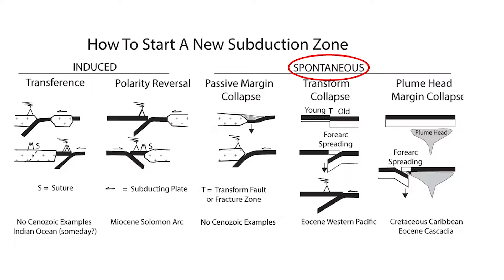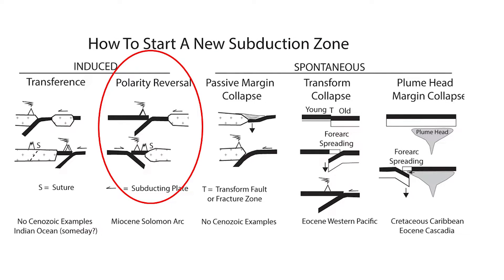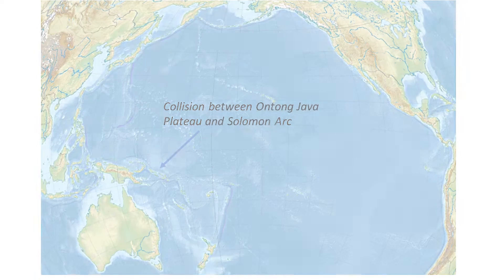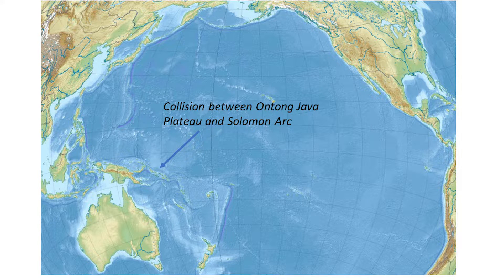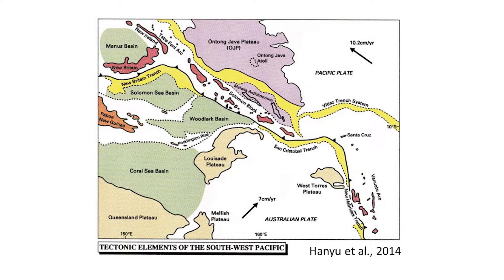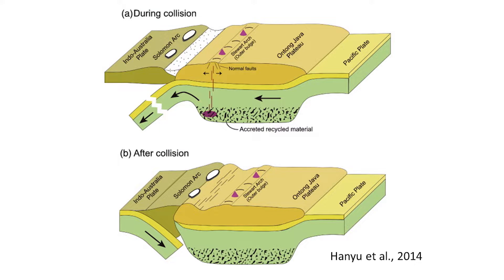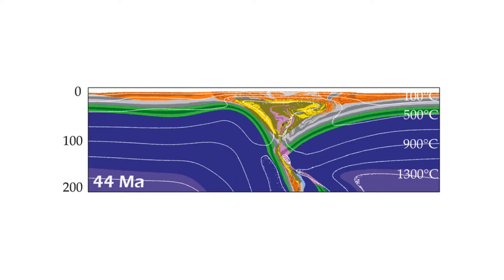The most important way that a new subduction zone can be induced to form is by polarity reversal, which sometimes happens when buoyant lithosphere is subducted beneath an oceanic arc. When this happens, the original subduction zone can fail and motion between the two plates may be accommodated by formation of a new subduction zone dipping the opposite way in the rear arc region. A good example is seen in the southwest Pacific, where the buoyant Ontong-Java Plateau was partially subducted in late Miocene time into a south-dipping subduction zone on the north side of the Solomon Arc, eventually shutting it down. As the Pacific and Australian plates continued to converge, dense old lithosphere in the rear arc began to fail along a lithospheric weakness near the hot magmatic arc, eventually forming a new north-dipping subduction zone, which continues to operate today.